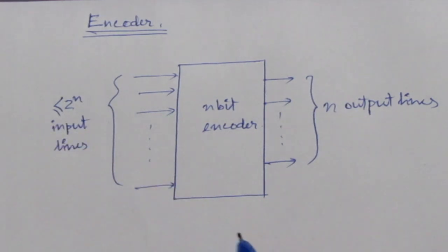An encoder is a digital circuit that performs the inverse operation of that decoder. In the decoder case, in the last tutorial, we saw that a decoder has n inputs and 2 to the power n output lines.